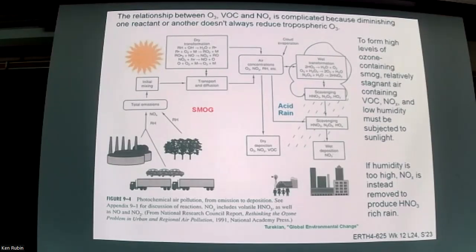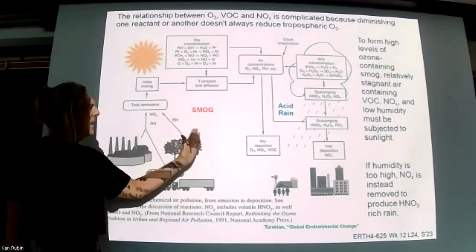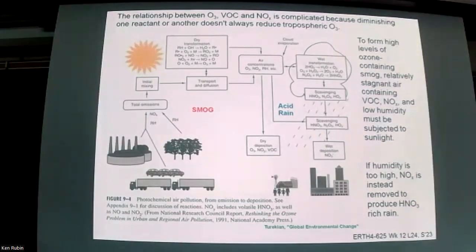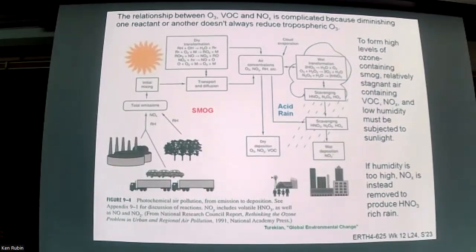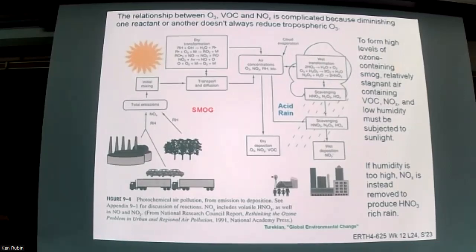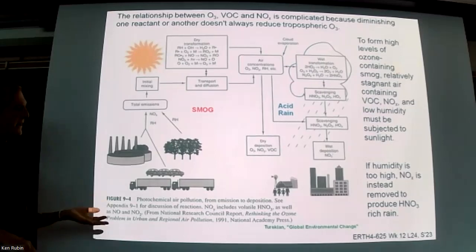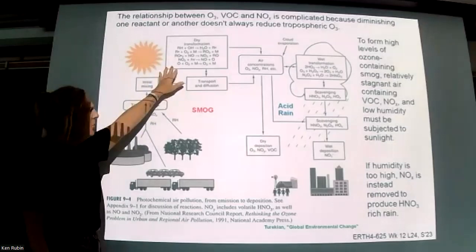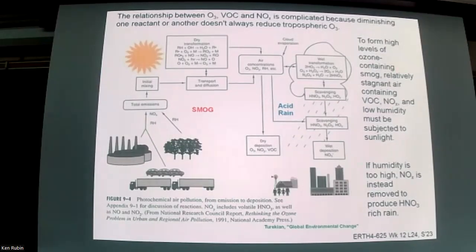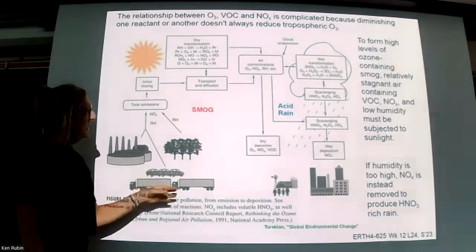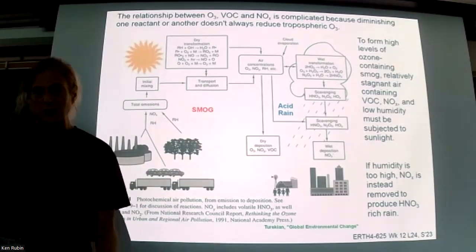This diagram ties all the nitrogen atmospheric processes together, with smog on one side and acid rain on the other. The primary difference is whether the atmosphere is wet or dry. A wet atmosphere dissolves the nitrogen into water, preventing the dry transformation reactions: the interactions with atmospheric oxidants, the production of aldehydes and carboxyl radicals, the production of organic irritants like peroxyacetyl nitrate. And in fact, one thing that clears out smog in chronically smoggy areas is a rainstorm — it simply washes all that stuff away.